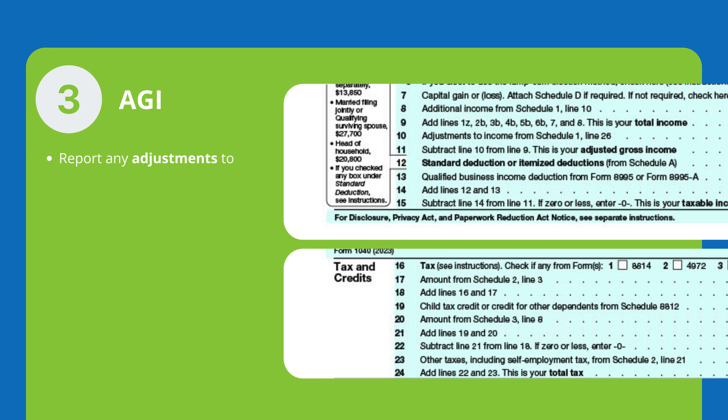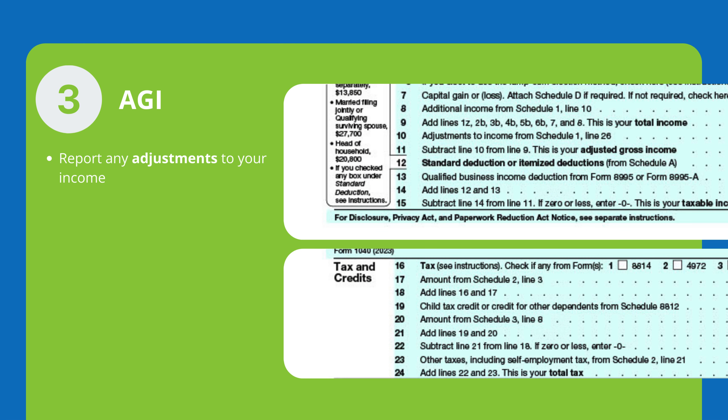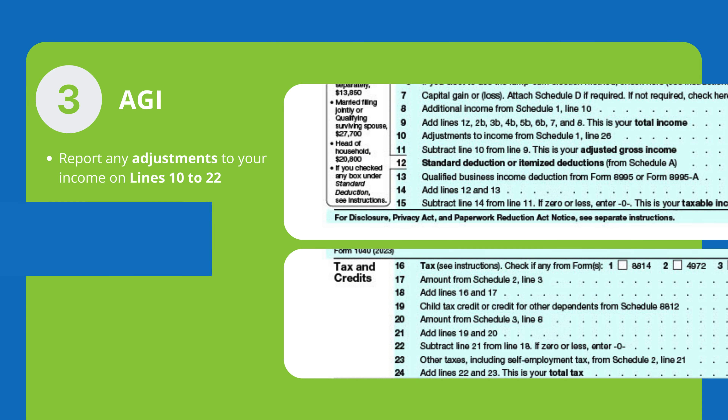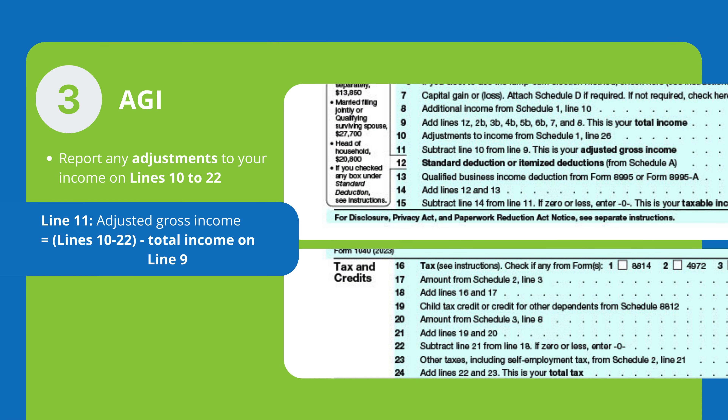report any adjustments to your income on lines 10 to 22. Calculate your adjusted gross income on line 11 by subtracting the amounts in lines 10 to 22 from your total income on line 9.